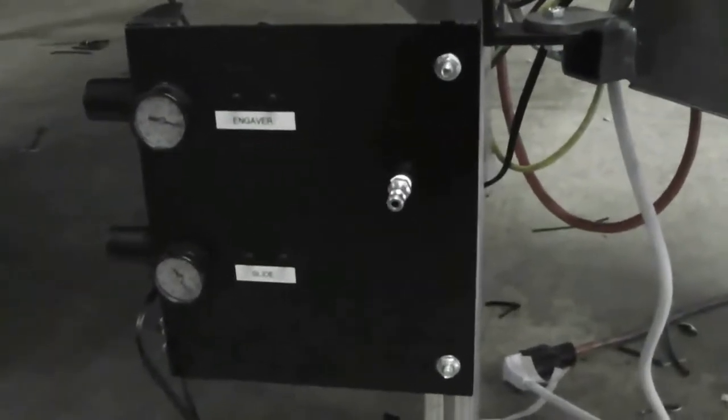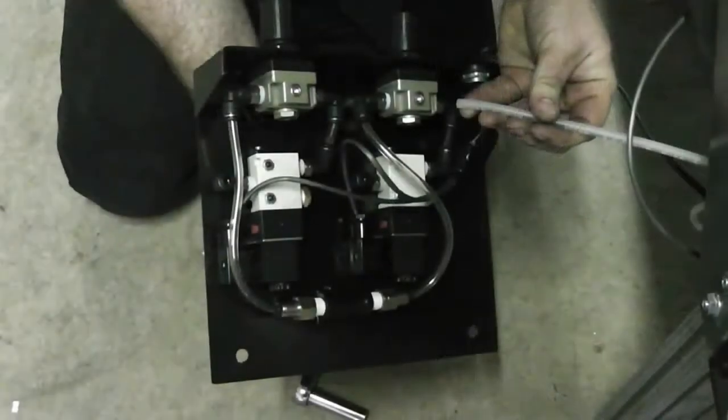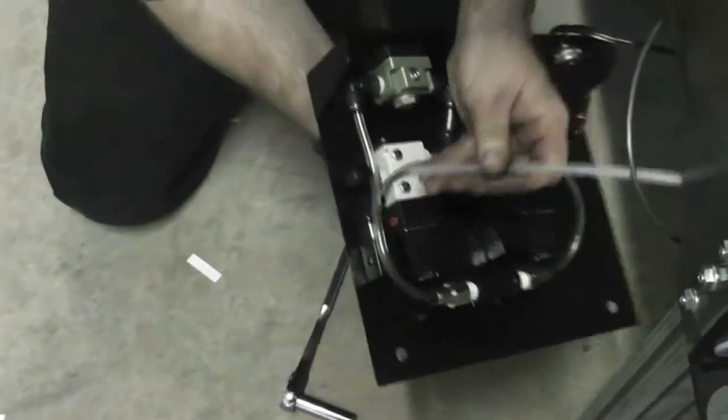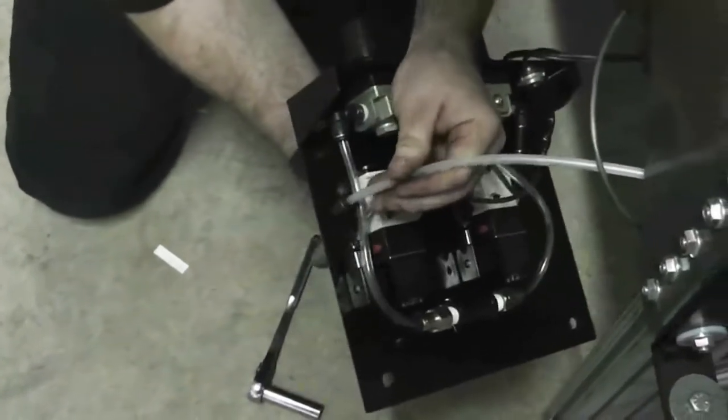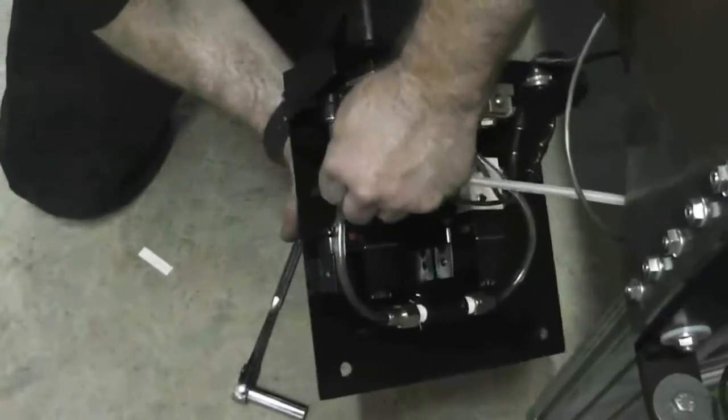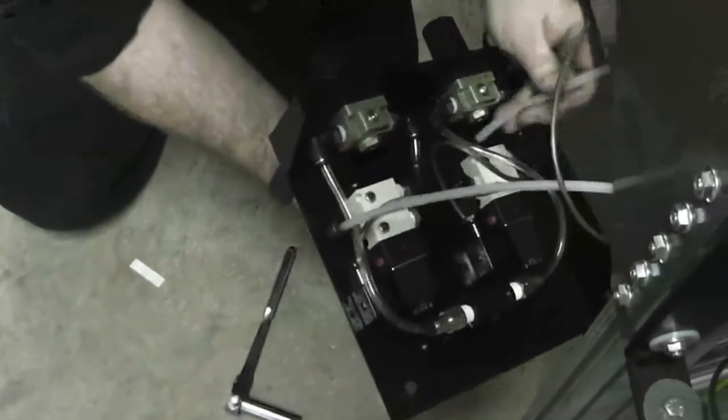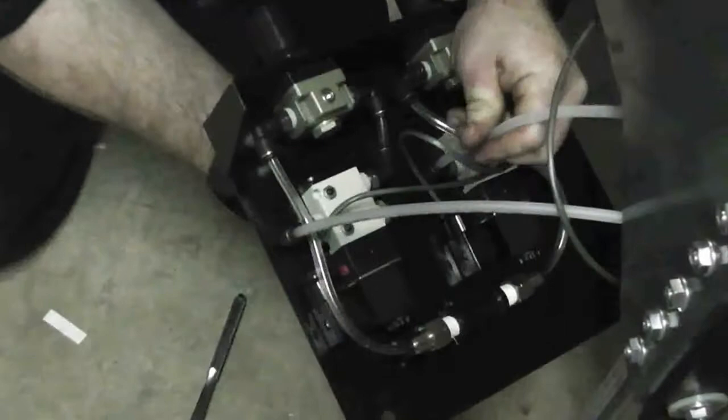These regulators feed to two solenoids. The top solenoid controls the engraver and gets connected to the line that goes to the oiler. And the second one controls the slide. These are press fit connections. They just press firmly in place.